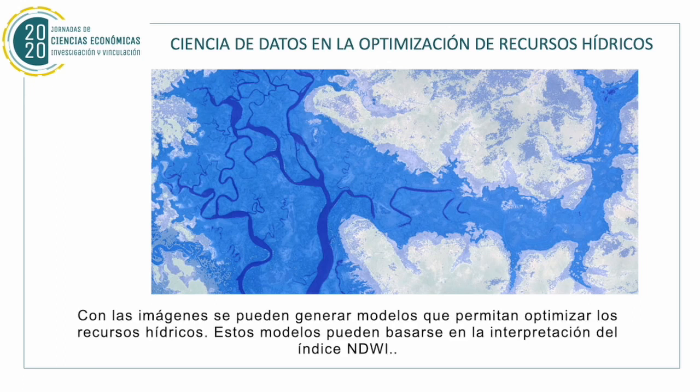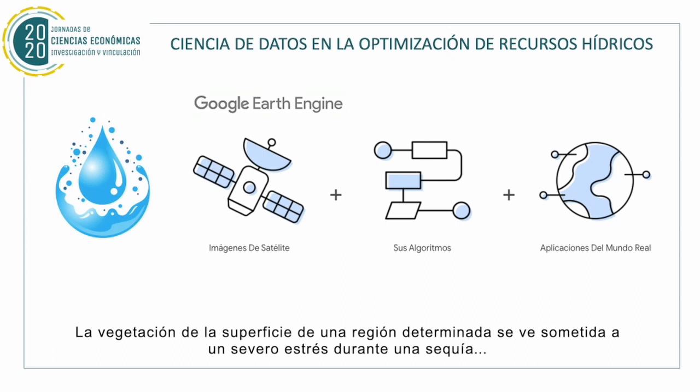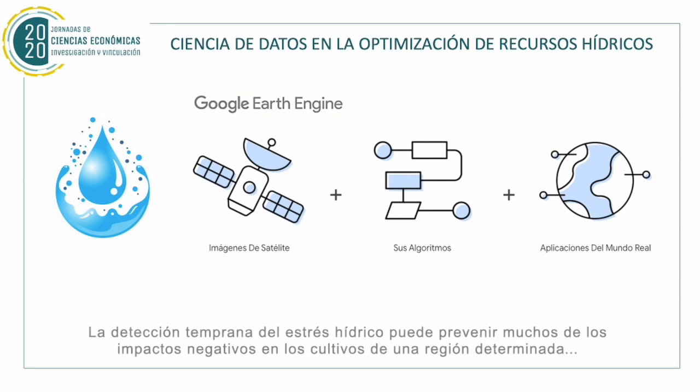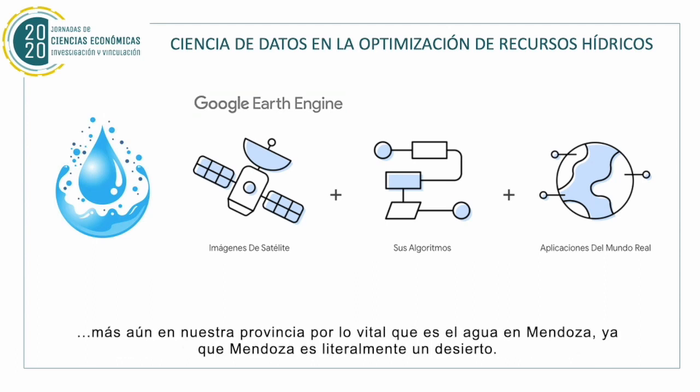With the images, it is possible to generate models that allow analysis of water resources. Those models can be based on the NDWI index. The vegetation of a determined surface zone can be submitted to severe stress during drought. If the affected areas are not identified on time, entire crops can result in damage. Aerial detection of water stress can prevent many negative impacts on the crops of a determined region,